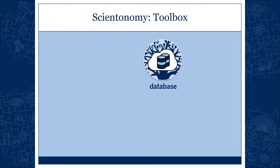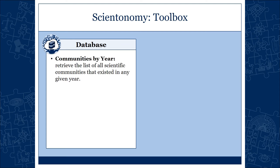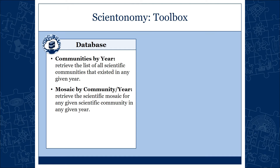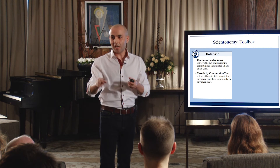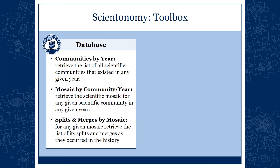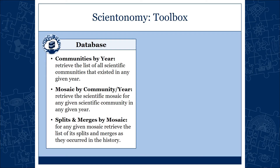Starting with the database — the most obvious tool. We need a database that would allow us to retrieve the list of all scientific communities that existed in any given year. You give it a year and it gives you a list of communities that existed at the time. The second thing: a mosaic by community and year — retrieve the scientific mosaic for any given scientific community in any given year. And for every mosaic, trace the splits and merges: how communities split into two, how they merge.